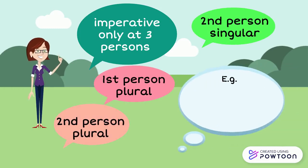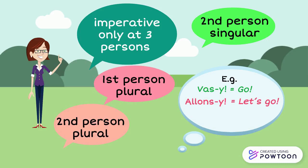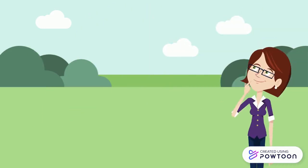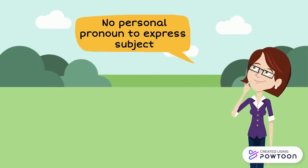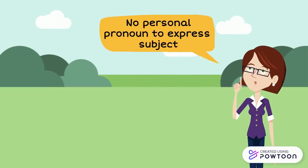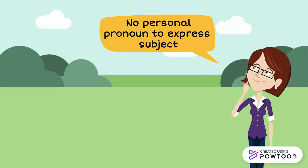For example: 'Vas-y!' — Go! 'Allons-y!' — Let's go! 'Allez-y!' — Go! The French imperative works quite like the English one. No personal pronoun is used to express a subject; it is implicit.